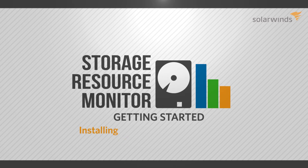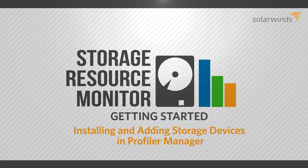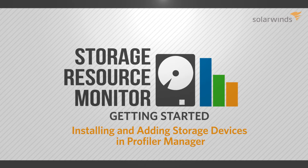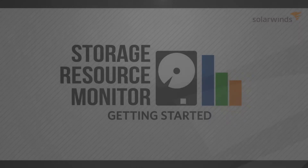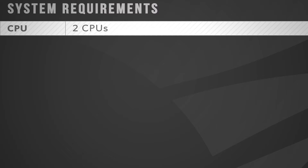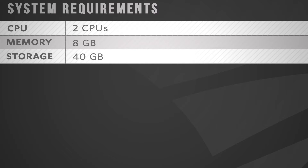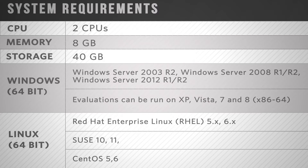This video will cover installation of SolarWinds Storage Resource Monitor profiler module and adding storage devices. The recommended server requirements for installing the profiler module are dual CPUs, 8 gigabytes of memory, minimum 40 gigabytes hard drive space, and a Windows or Linux operating system.